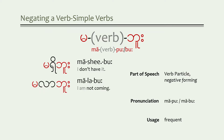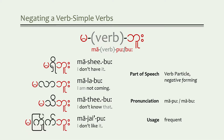To say 'I'm not coming': ma-la-boo. To say 'I don't know that': ma-ti-boo. Or to say 'I don't like it': ma-ja-poo. Notice in this last example, the verb ends with a stopped tone — very abruptly — and that's what turns the pronunciation of the final particle from boo to poo.